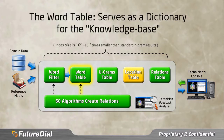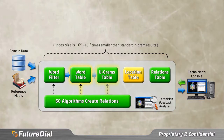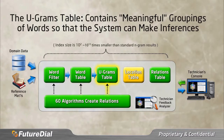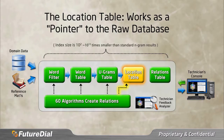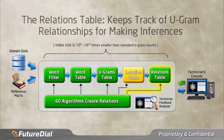Next, the word table receives meaningful words from the word filter, and it is this word table which serves as a dictionary for the knowledge base. The word table next delivers data to the Ugrams table, which will contain meaningful groupings of words in order for the system to make inferences. The location table works as a pointer to the raw database; it lists the location or the origin from where the Ugram groupings were extracted by the system. The relations table keeps track of which Ugram is related to other Ugrams in the system, helping the system in making related inferences when examining problems.